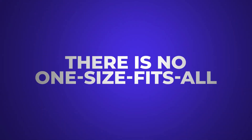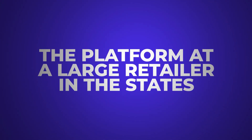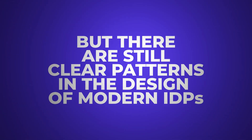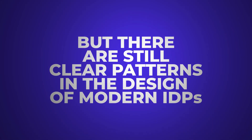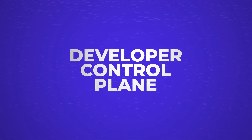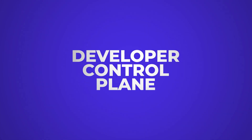There is no one-size-fits-all for IDPs. The platform at a large retailer in the States will differ widely from the platform at a startup in Berlin. But there are still clear patterns in the design of modern IDPs, and they can be divided and described by five planes. The exact design of those planes differs by organizational preference. First, we have the developer control plane, which clusters the primary interfaces developers can choose to use when interacting with the platform.